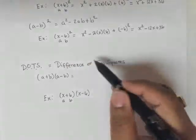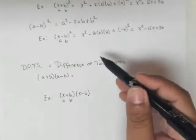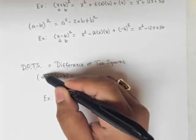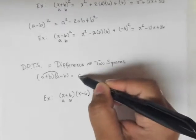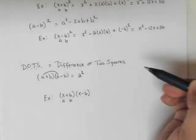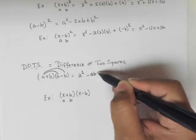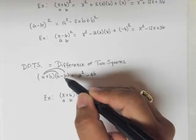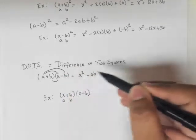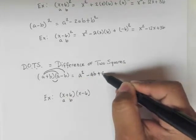Let's do the FOIL method. a times a gives a², a times minus b gives minus ab. Now the inside: b times a gives us plus ab.